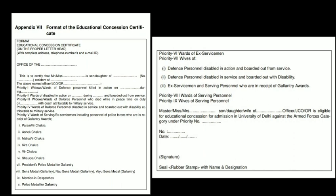There are some authority names given — like Sainik Board, Zila, and some other names — I don't remember the exact names. Whichever authority is nearest to you and feasible for you to visit, you go there. They will have their own letterhead — meaning at the top their name, the authority's name, their proper address, and their proper mobile number will be printed. Then below, all the content in this format will be typed on that paper, and your information will be filled in — certifying that Mr. or Miss so-and-so belongs to this category and this priority. The authority will write this for you if you provide valid proofs, like your father's service card or whatever documents they require.